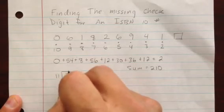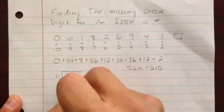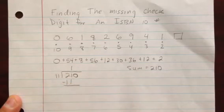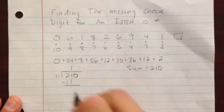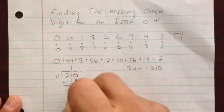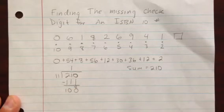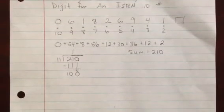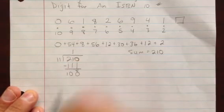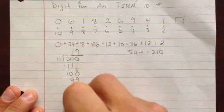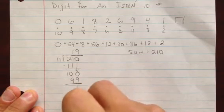So 11 goes into 2, 0 times. But it goes into 21, 1 time. 1 times 11 is 11. Remember, keep your work neat and organized so that you can see where everything's at. 21 minus 11 is 10. And we bring down the 0. And after this then, you can see that we need to move down just a little bit here so we have some space. Good. And then 11 goes into 100, 9 times. 9 times 11 is 99. And we subtract that and get 1.